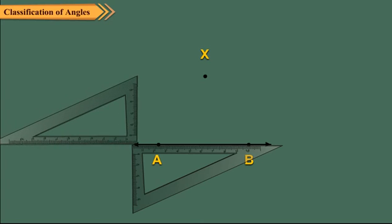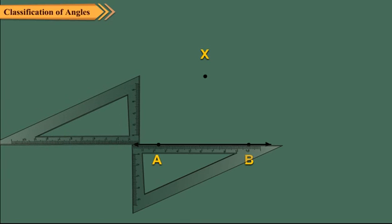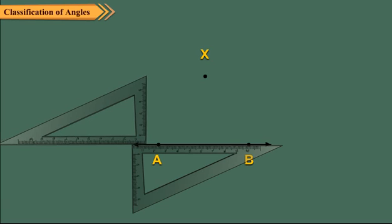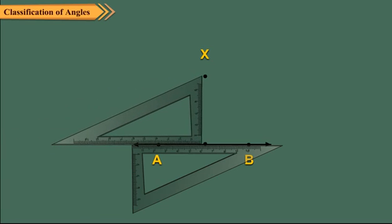Next, place the longest side of the other set square along the vertical edge of the first set square and hold the second set square tightly, and slide the first set square until its edge passes through the point X.